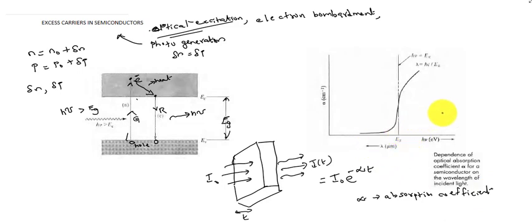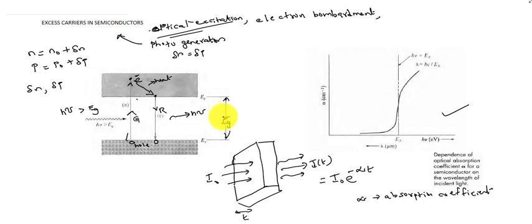We plot the absorption coefficient as a function of photon energy. If the incident photon has energy greater than the band gap energy, the velocity of the excited electron will be higher and the excess energy of the electron is released into the lattice as heat during scattering events, until its velocity becomes the thermal velocity at that temperature. The transmitted light equation is I(t) = I0 * e^(-αt).